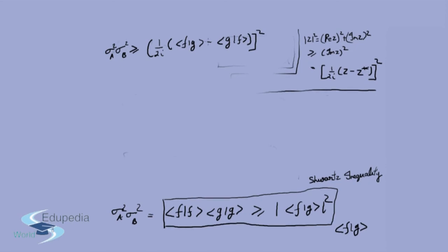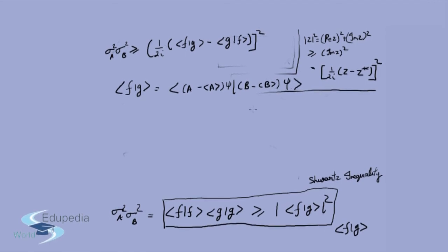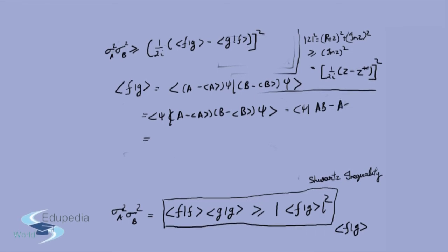Now let's look at what the inner product ⟨F|G⟩ is. This comes out to be the inner product of (A minus expectation value of A) psi with (B minus expectation value of B) psi. Doing a little bit of mathematics, this equals ⟨psi | (A minus ⟨A⟩)(B minus ⟨B⟩) | psi⟩, which can be split into four terms: A·B minus A·⟨B⟩ minus B·⟨A⟩ plus ⟨A⟩·⟨B⟩.